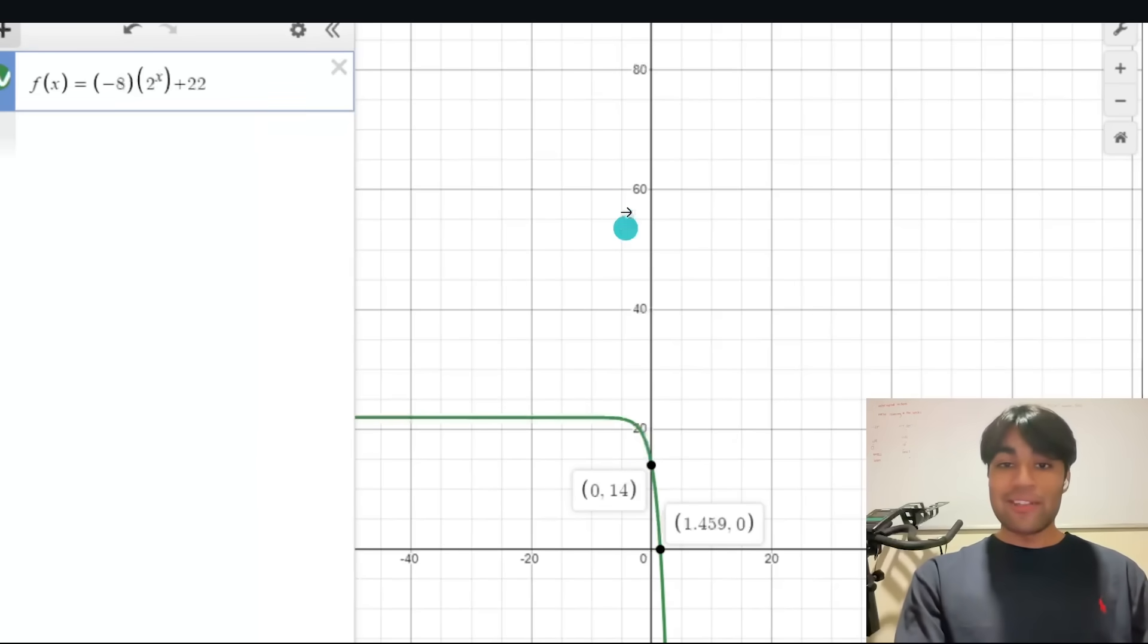The thing that intersects on this y axis and the thing that intersects on this x axis are your y and x intercepts. It's really that simple. You just right here 0 comma 14 your y intercept, 1.459 comma 0 your x intercept and there could be multiple of course depending on the equation.